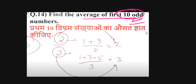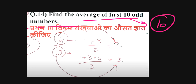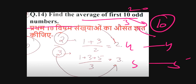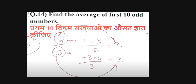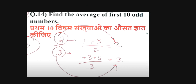So the average of the first 10 odd numbers is 10, first 2 odd numbers is 2, first 3 is 3, first 4 is 4, first 5 is 5. So the average of the first N odd numbers is always equal to N.